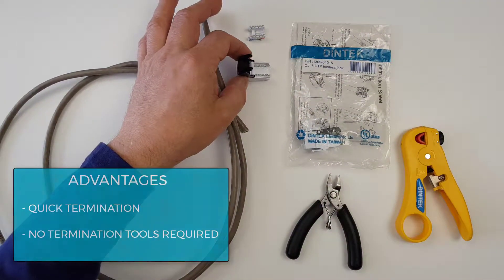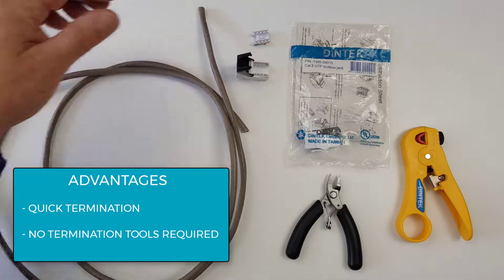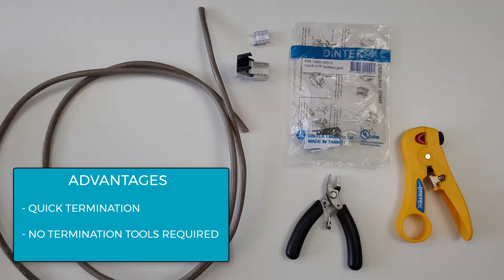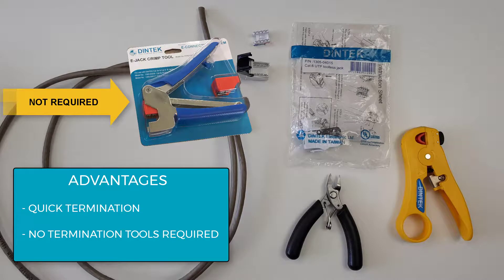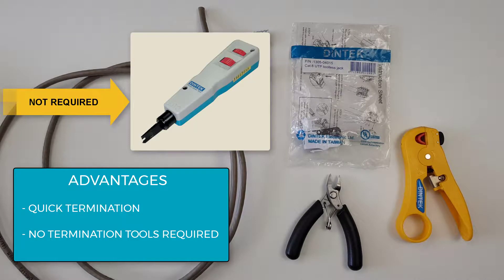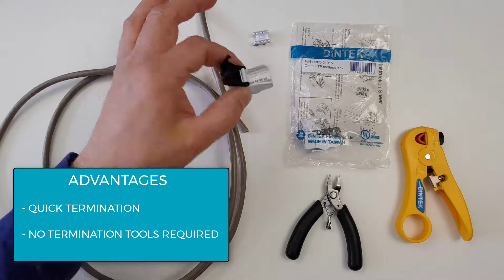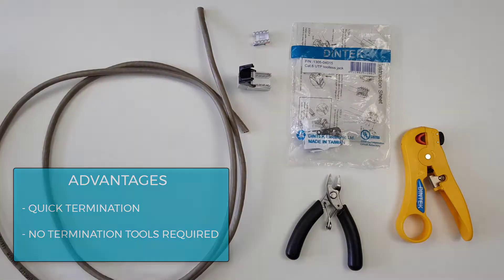Now the advantages of using the tool-less jacks are, of course, if you don't have the termination tools to hand, could be the crimp and cut easy tools or the 110 tools, but without those you can use these to do a tool-less termination.